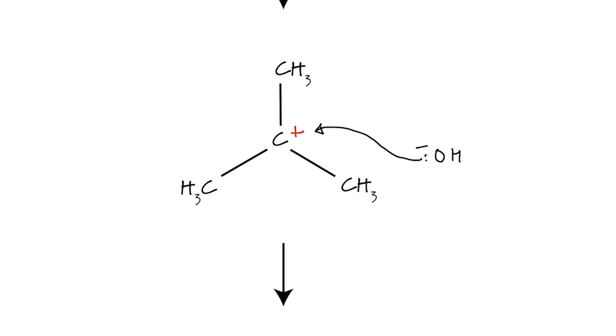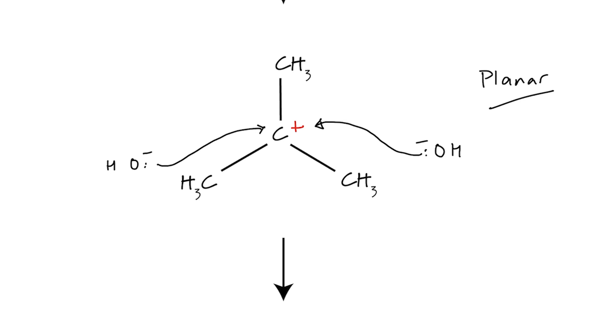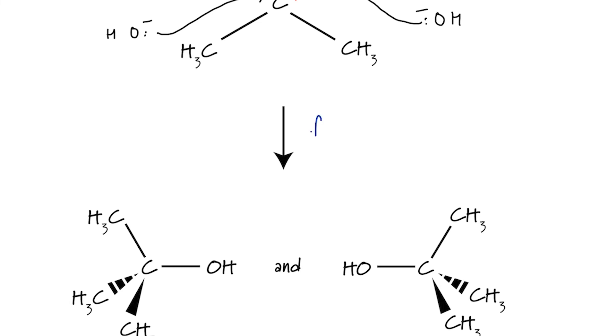We can also see that our nucleophile can attack from either angle, because this transition state is planar. So the geometry has changed. Once the nucleophile has attacked, then we have a very fast step from our transition state, our carbocation, to our products.